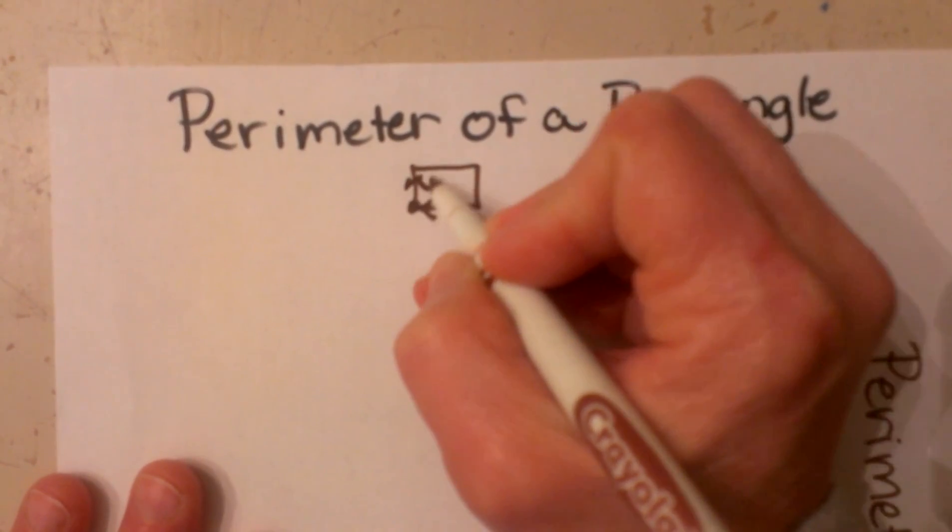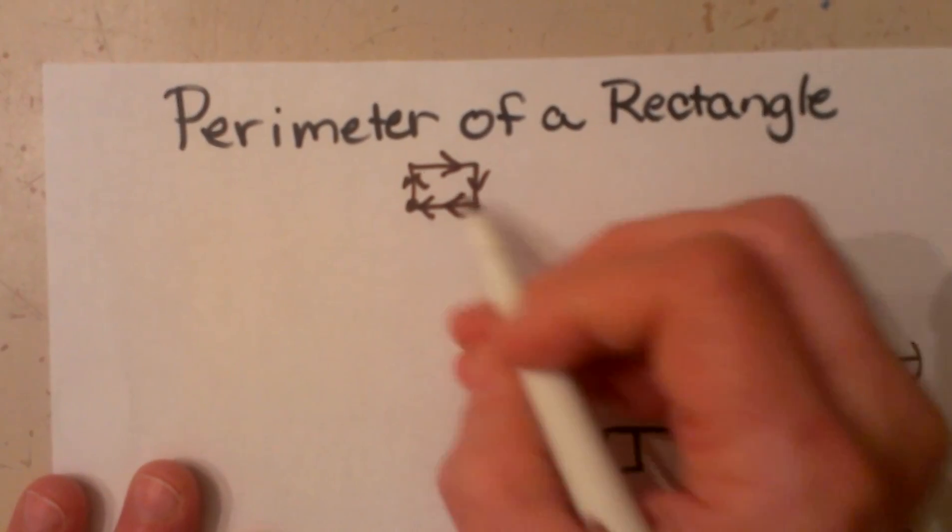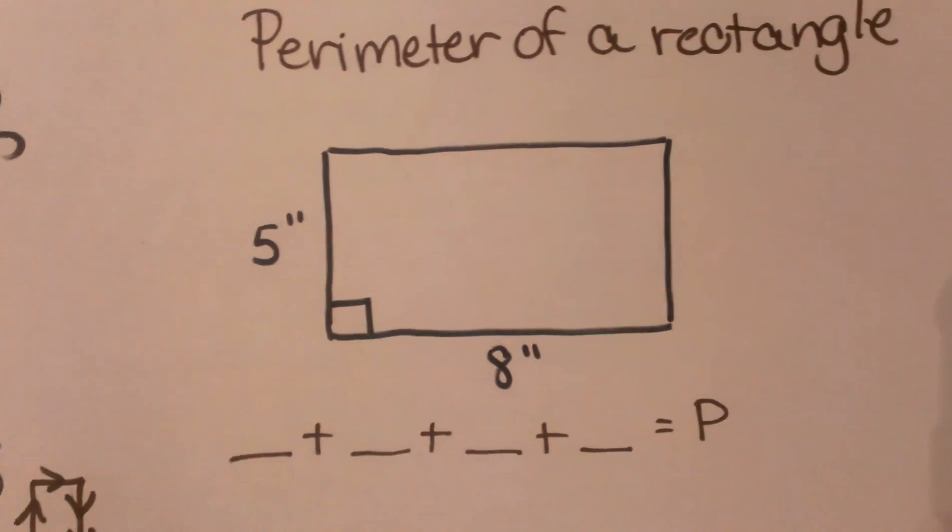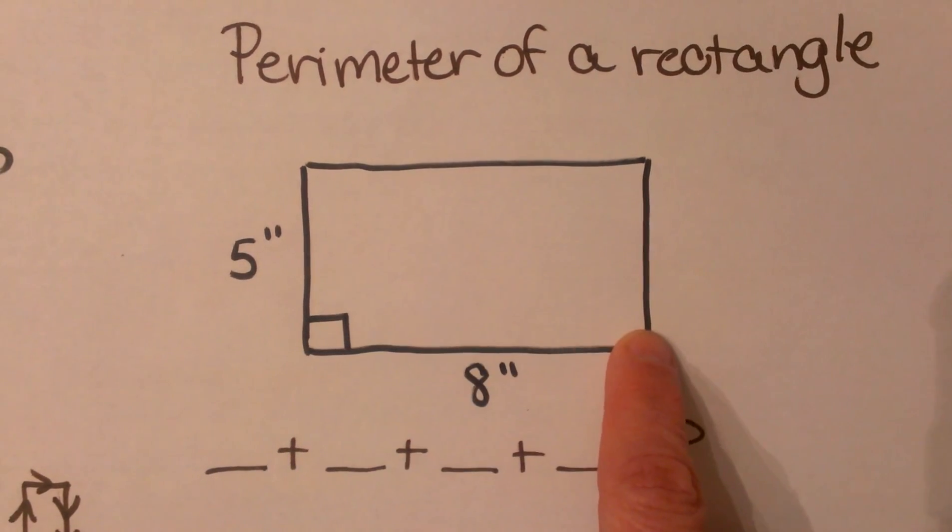You start at one corner and add this side plus this side plus this side plus the base to get the perimeter. We know we're going to add all four sides, so let's look at what we've got here. We've got a rectangle that measures 5 by 8.